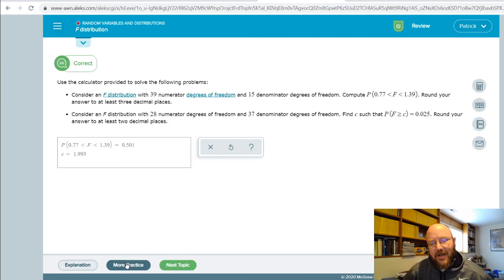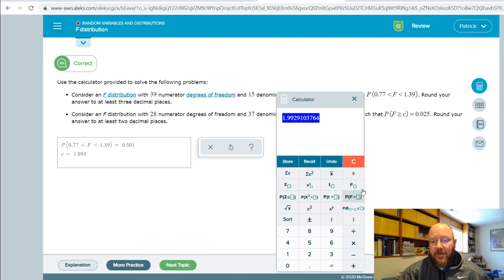And there we go, piece of cake. All right, so again, this problem, f distribution, is just getting you used to using the calculator on this, and so that's to look up the probability or to look up a critical value, which is going to be really important in some of the problems in the remainder of this chapter.